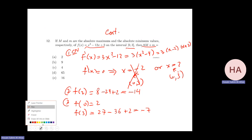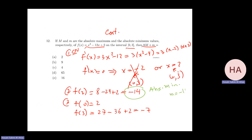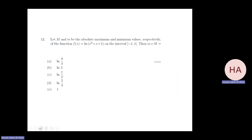Checking the endpoints: f(0) equals 2. f(3) equals 27 minus 36 plus 2 equals minus 7. So the absolute minimum is minus 14 and the absolute maximum is 2.